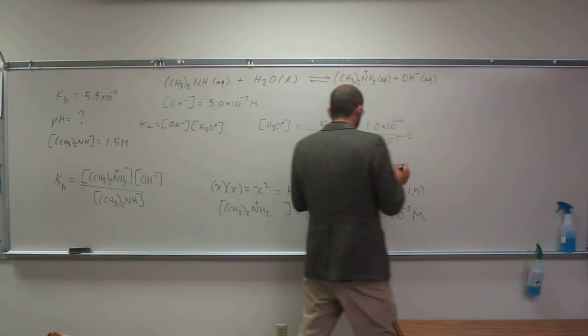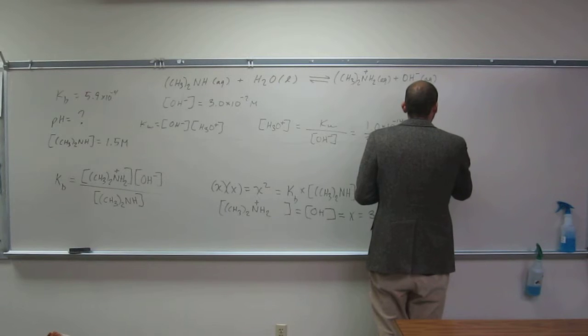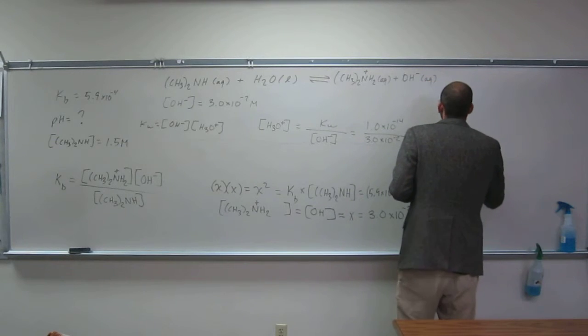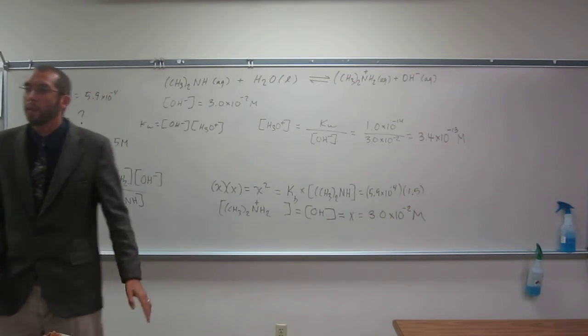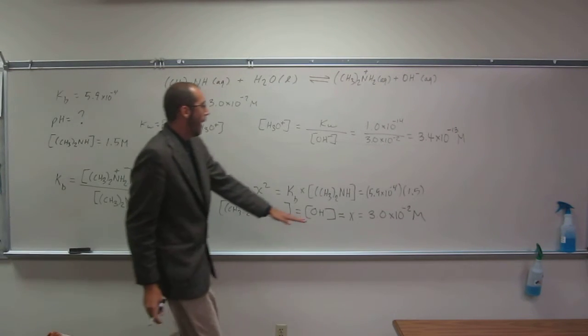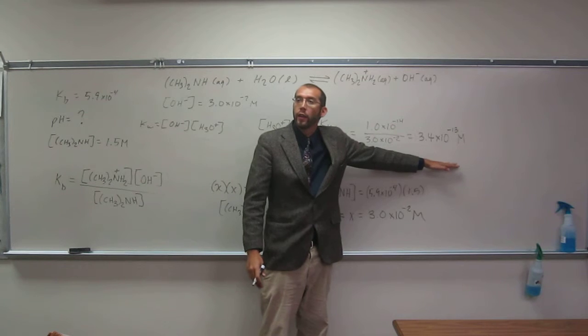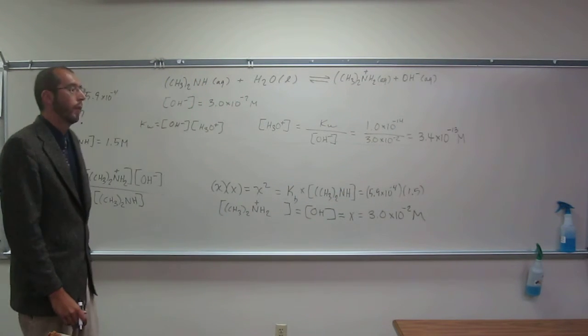Okay, and then when I do that, I get 3.4 times 10 to the negative 13 molar, okay? As you might imagine, this would be very high on the OH, right? So it's going to be very low on the H3O plus. Is everybody okay with thinking like that? Okay.